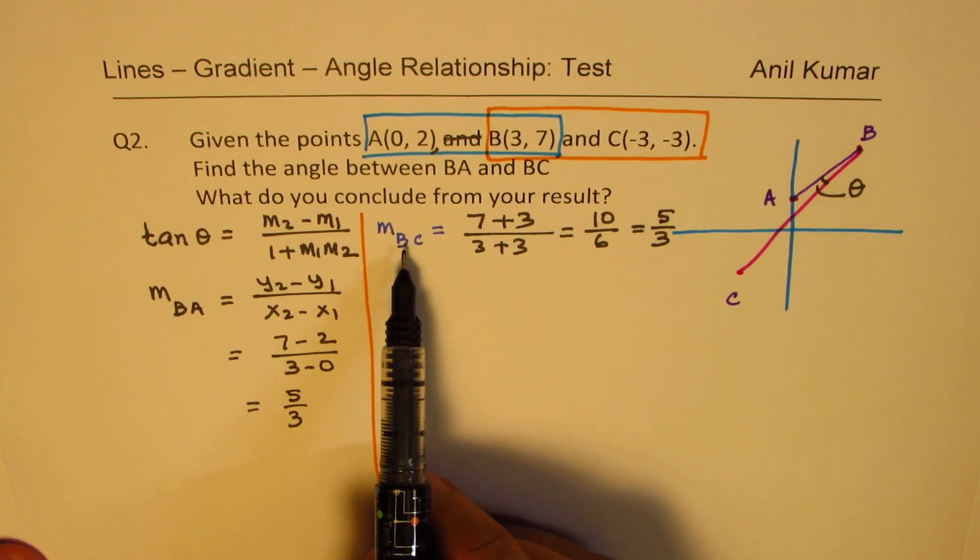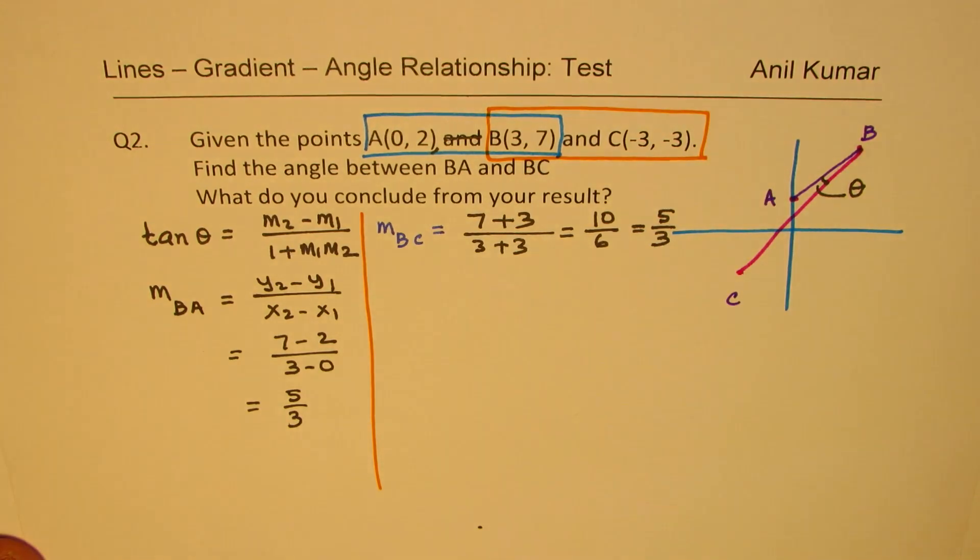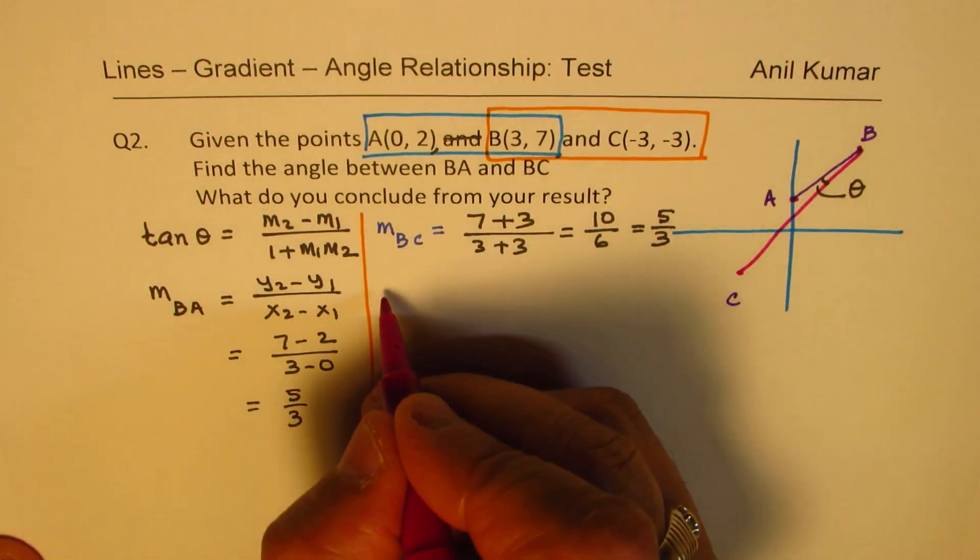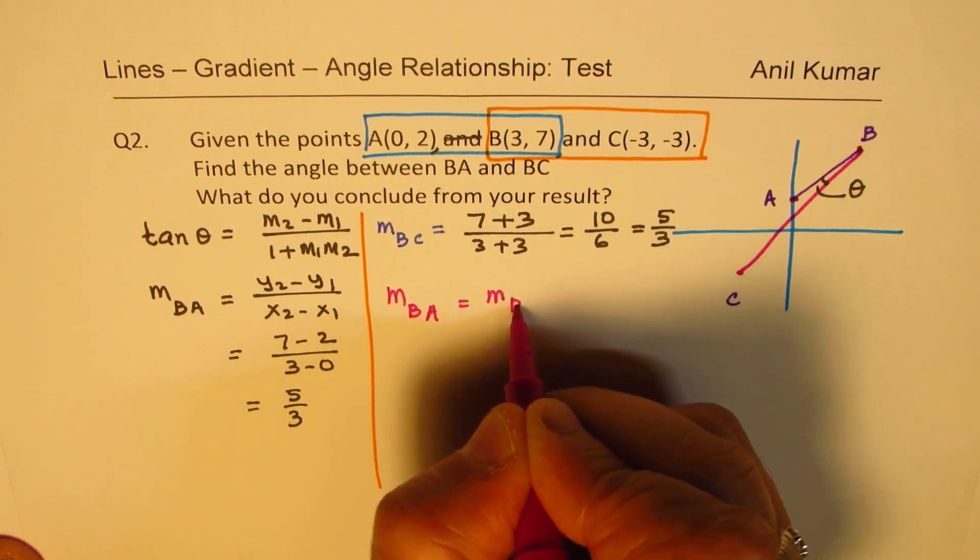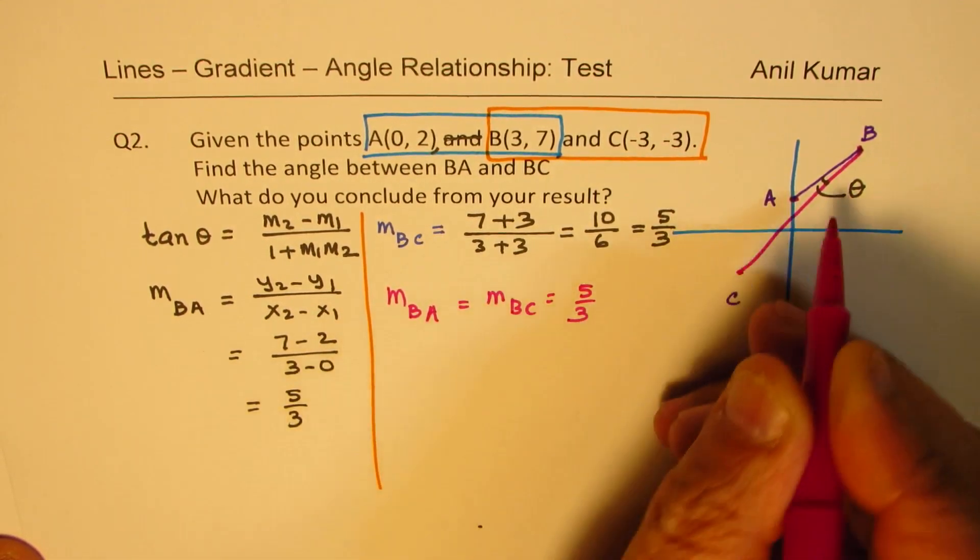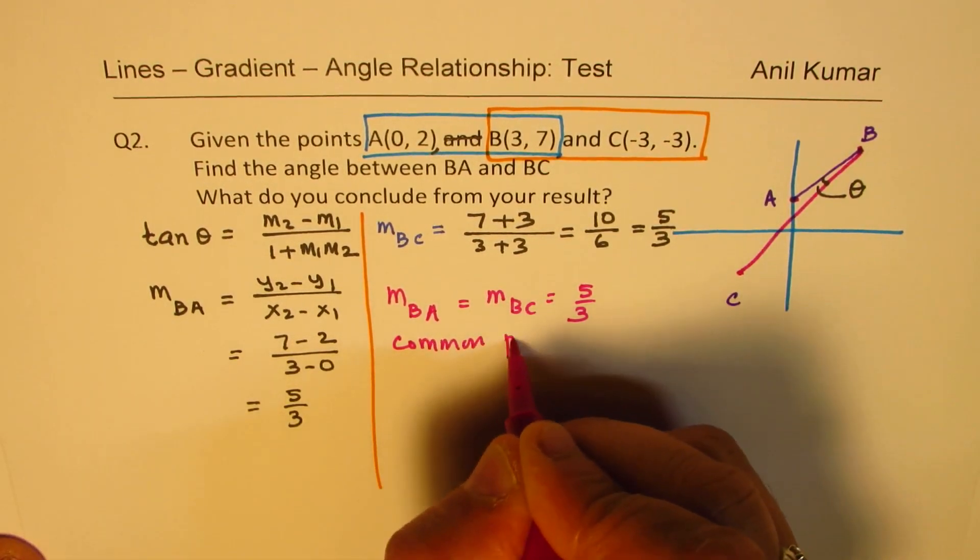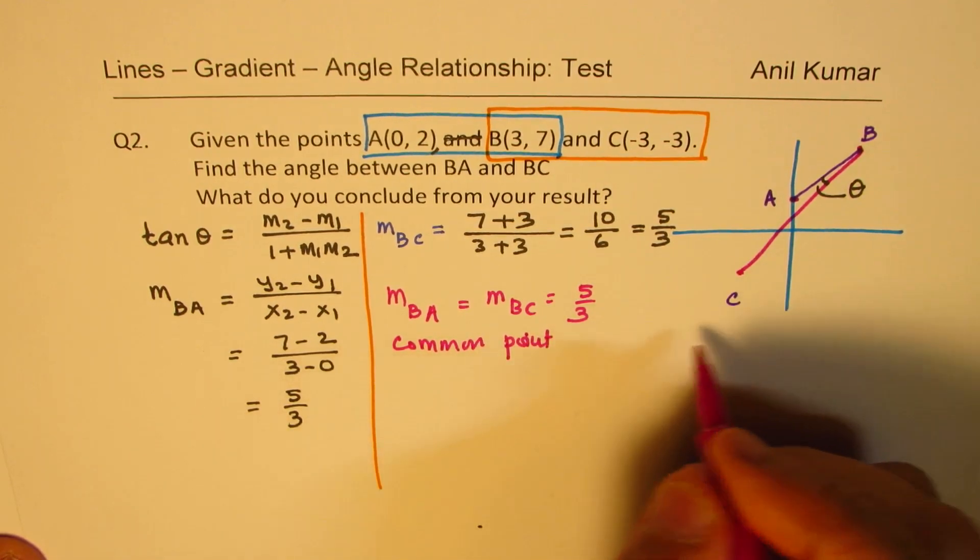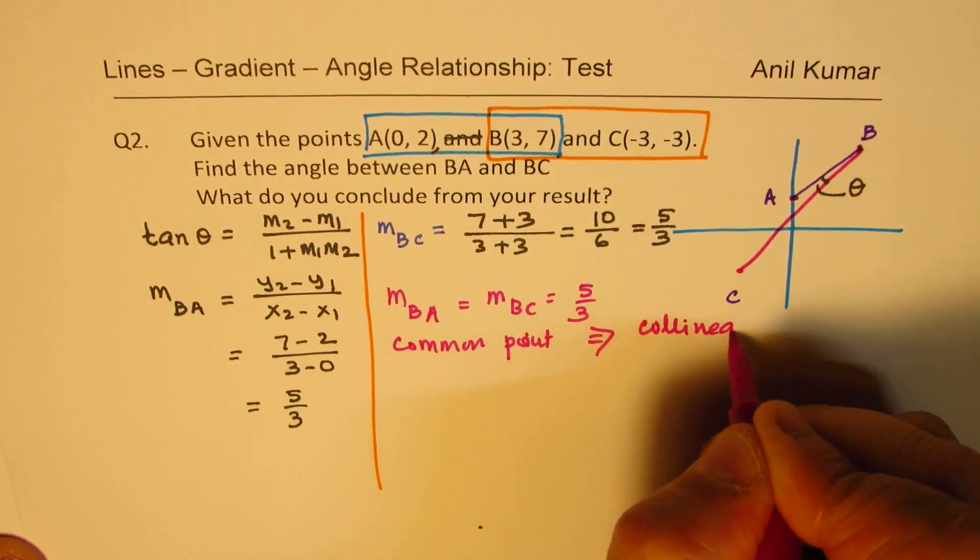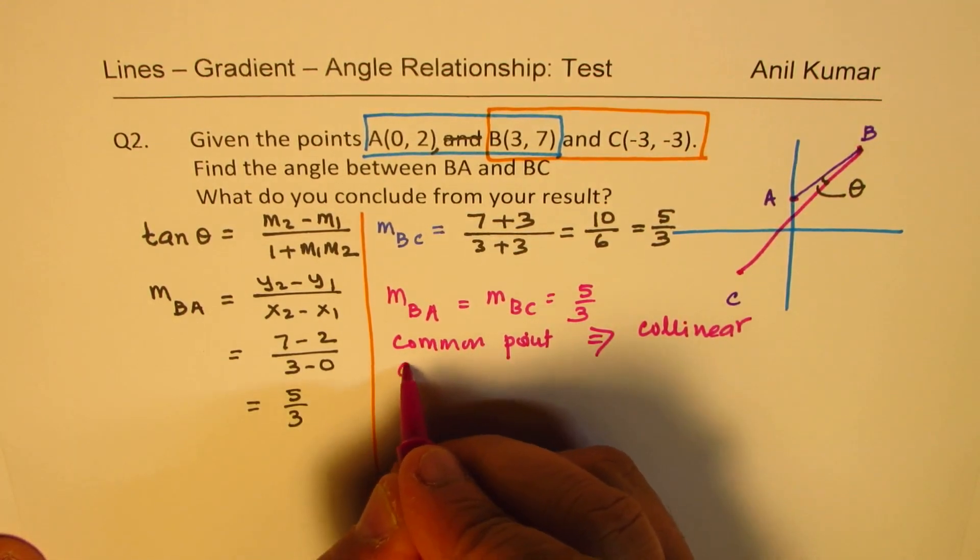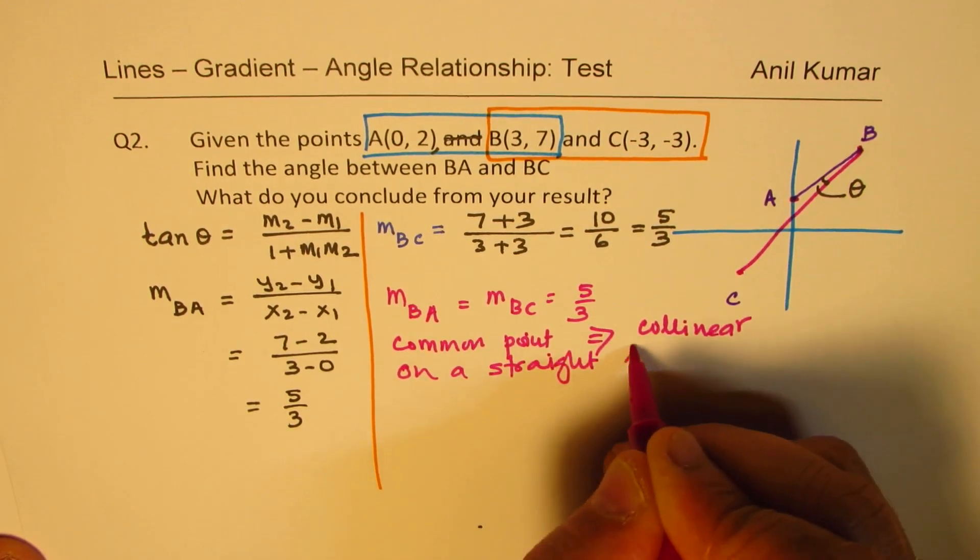So what do you find here is that the slope between BC and BA is same. So what you notice here is that the slope BA is equal to slope BC, and both are equal to 5 over 3. And since we have a common point, that means they are collinear. That means they are on a straight line.